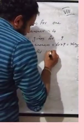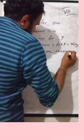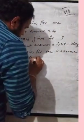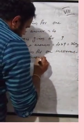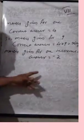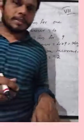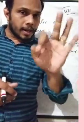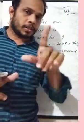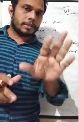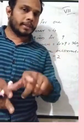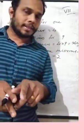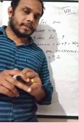One incorrect answer equals minus 2. So how many incorrect answers are there? All 15 questions are attempted and only 9 are correct, so there are 6 incorrect answers.